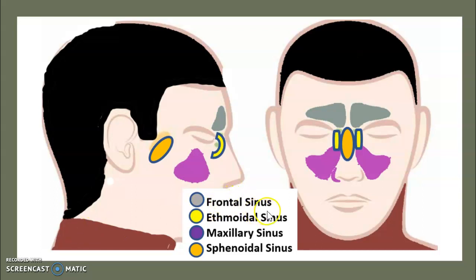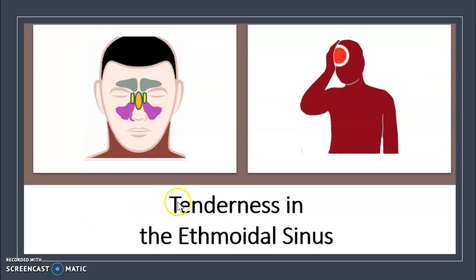Here are the sinuses: the frontal sinus, the ethmoidal sinus, the maxillary sinus, and the sphenoidal sinus. In preseptal cellulitis, the infection comes most of the time from the ethmoidal sinus.